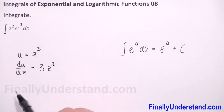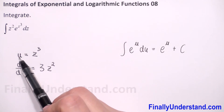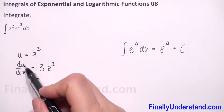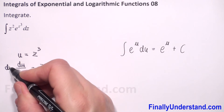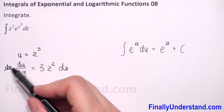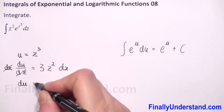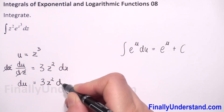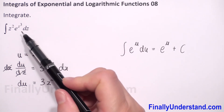Now, to find du — because we substitute z cubed by u — we have du in the numerator. I will multiply both sides by dz, and dz and dz we can reduce, so we have du is equal to 3z squared dz.